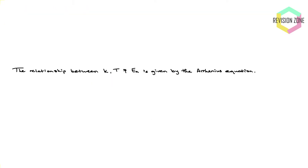So how are K, temperature, and activation energy all related? They're all put together by the Arrhenius equation, which gives you the relationship between all three. This is something you need to know, but more importantly you need to know how to manipulate it. The temperature must be in Kelvin, and it's also worth highlighting the negative sign in the exponent — that's going to be quite important later on.